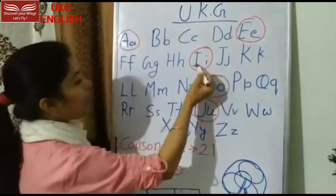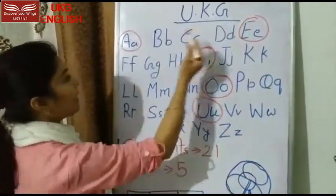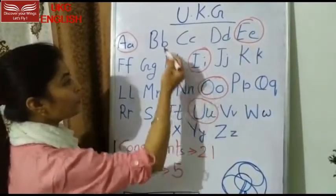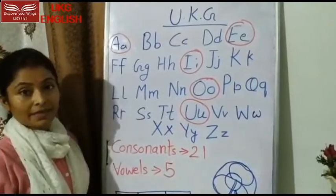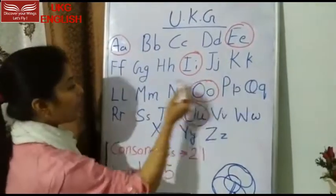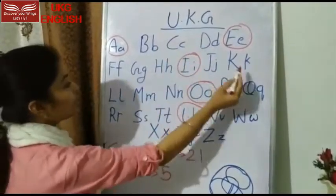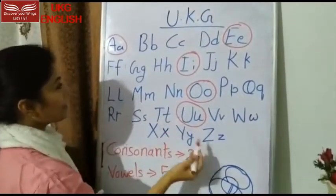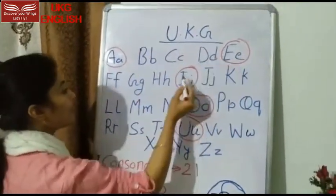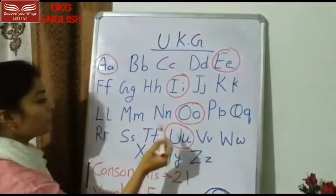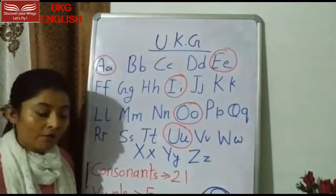A, E, I, O, U छोड़कर जितने भी letters हैं — A, E, I, O, U छोड़कर जितने भी letters हैं — यह क्या हैं? Consonants हैं. These are 21 consonants. And A, E, I, O, U — these are vowels. Understood?